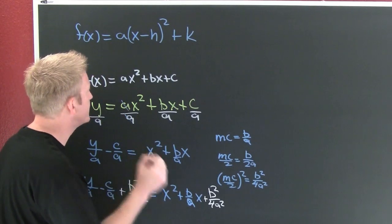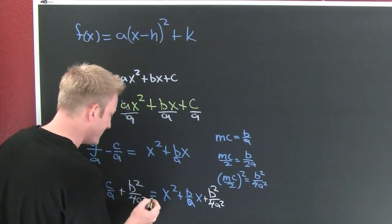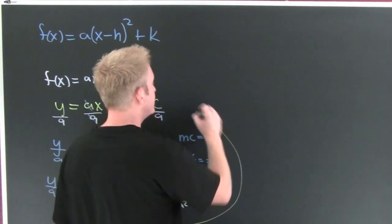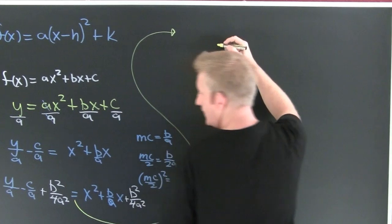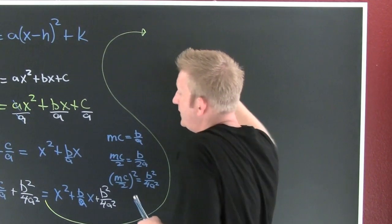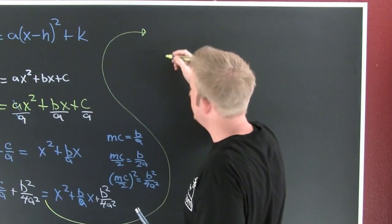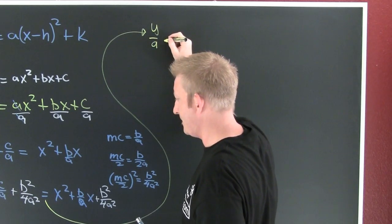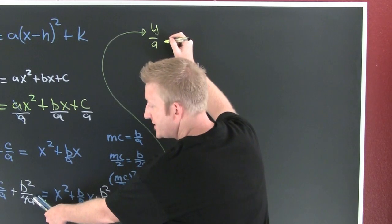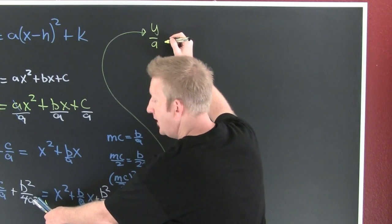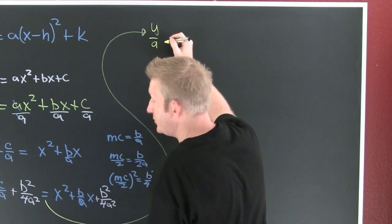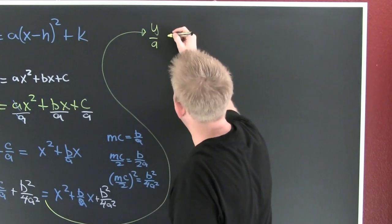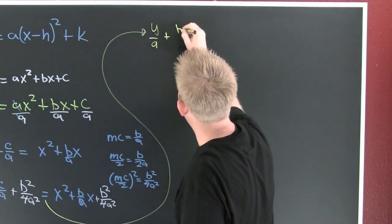And on the right you complete that square. So then on the left you'll have y over a. Now when I'm adding those fractions I need to get a common denominator.